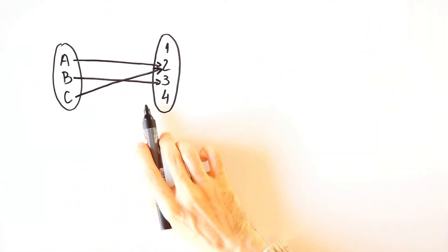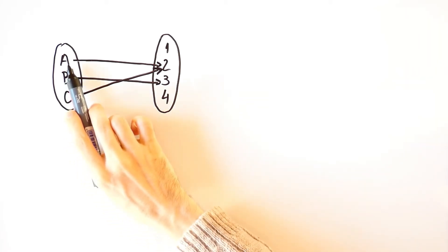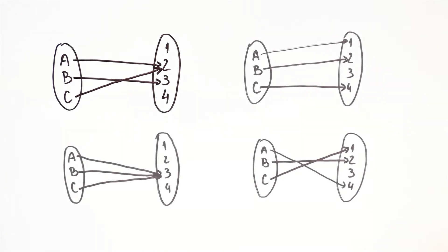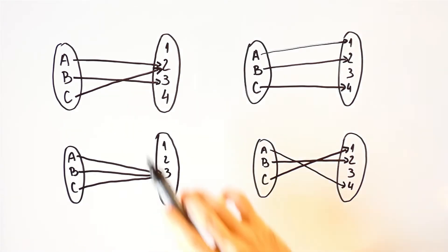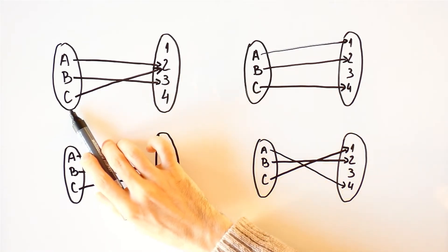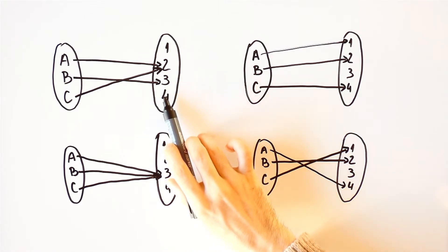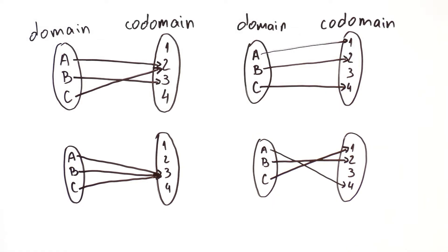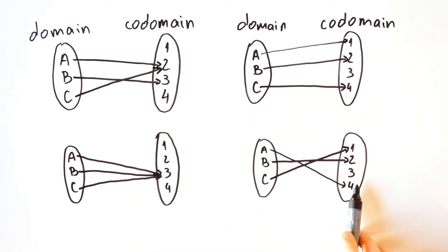Here we have that same function, but that is not the only function from the set of A, B and C to the set of 1, 2, 3 and 4. Here are some other examples. Note that in all cases, to each element of the first set is assigned exactly one element of the second set. The first set is called the domain, while the second set is called the codomain of a function. So these four functions have the same domains and the same codomains.